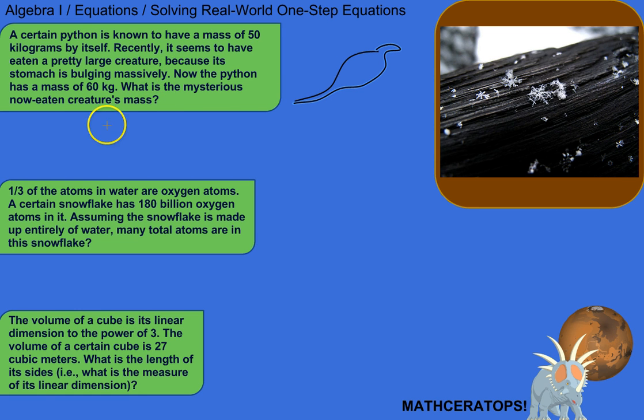So, let's translate this into algebra. So now, it used to have a mass of 50 kilograms. But, it ate something. So, its mass was increased by however much, the mass of that creature it ate. And so, once it ate it, it now has, now the python has a mass, a collective mass of 60 kilograms. So it's starting mass plus what it ate is now its mass.